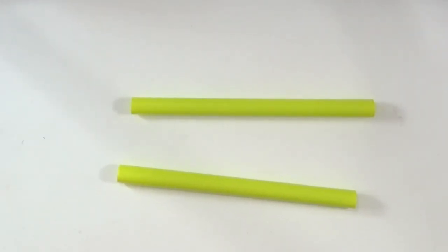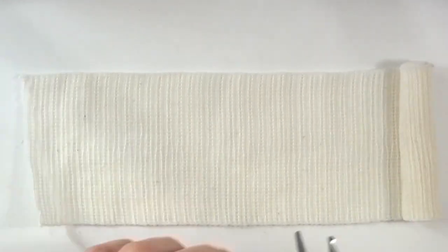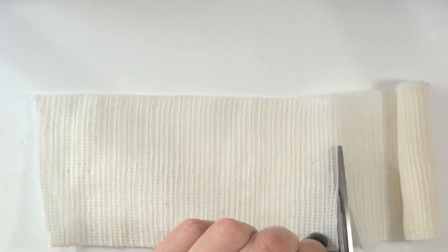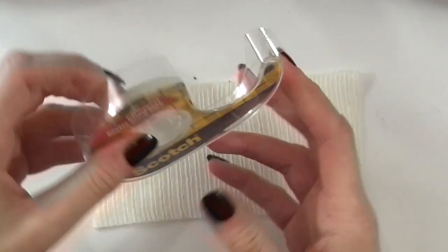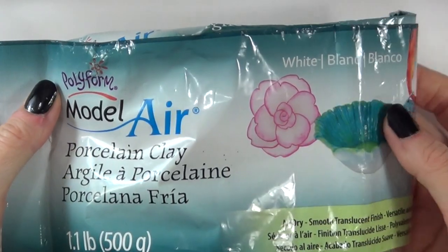I did use some gauze for texture, but it ended up not showing as much, so if you have it you can use it. I'm just going to tape it on the table. Then I'm going to be using this kind of clay—porcelain clay, a kind of clay that hardens with air.